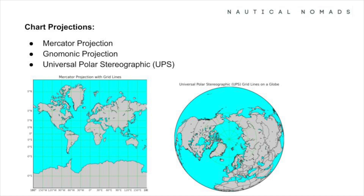The Universal Polar Stereographic projection, or UPS, is specifically used for polar regions. It minimises distortion in high-latitude areas, making it essential for Arctic and Antarctic navigation.